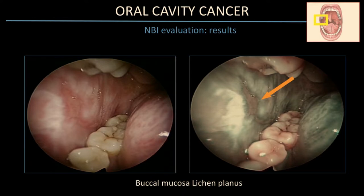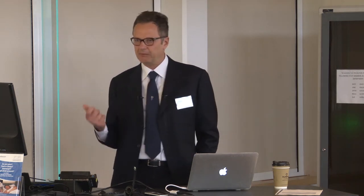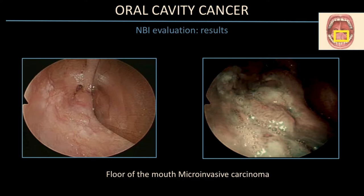NBI plays an important role in following lichen planus cases. In diffuse erythroleukoplakia, you don't know where to take the biopsy because the entire mucosa appears altered. NBI is very useful to address the right place for biopsy and also helps follow the patient without performing unnecessary biopsies, significantly reducing patient morbidity. Another case of microinvasive carcinoma again shows the different appearance between white light and NBI.